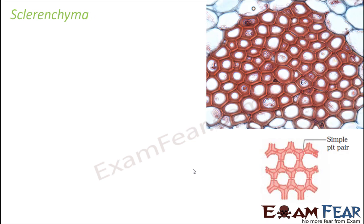Now let us talk about the third type of simple permanent tissue, that is sclerenchyma. In parenchyma, the intercellular spaces were comparatively more. Then came colenchyma where the intercellular spaces became negligible. Now in sclerenchyma, the intercellular spaces are not there at all. The lesser intercellular space you have, the more strong or more rigid the tissue is. Parenchyma is primarily used for food storage, water storage, and similar functions. But colenchyma, with lesser intercellular space, is strong enough and therefore provides support and flexibility to the plant.